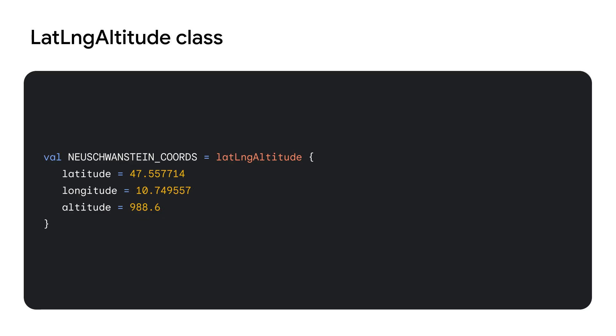As we move into the realm of 3D mapping, it shouldn't come as a surprise that we'll need to add a third dimension to the traditional latitude and longitude coordinate class. This is where the LatLngAltitude class comes into play. This class represents a location by combining the latitude and longitude coordinates with an altitude. Note that we specifically use altitude because these LatLngAltitude instances are not bound to the Earth's surface.